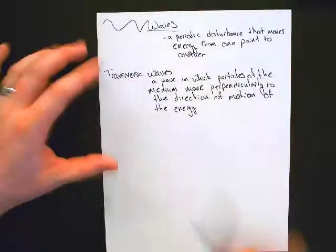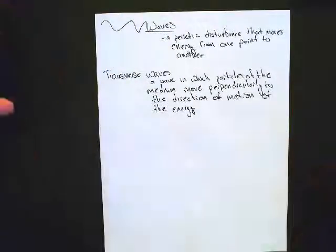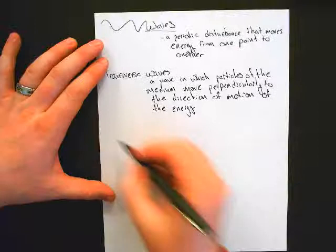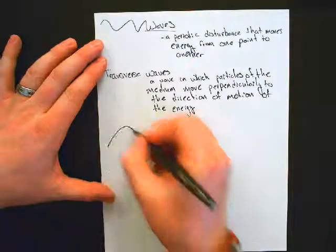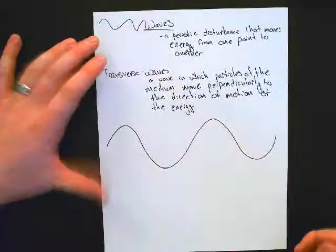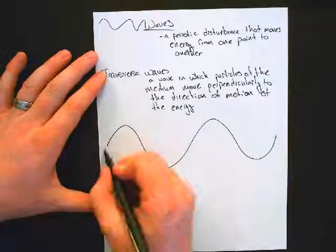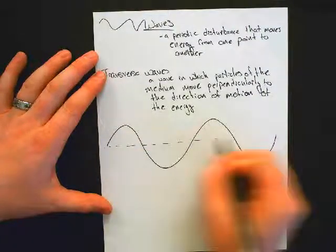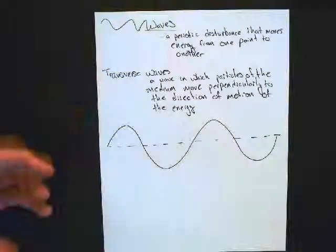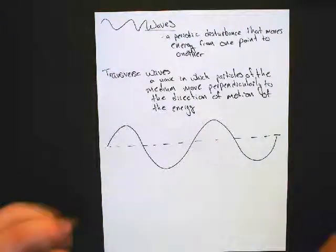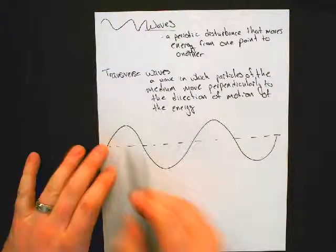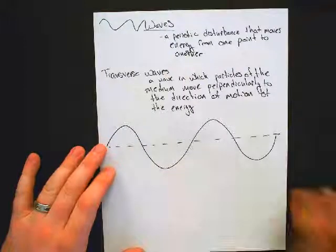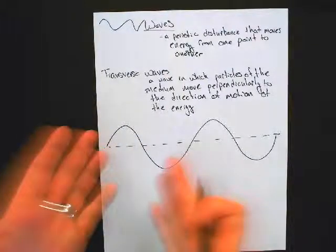Transverse wave. We've got a medium. It's the stuff through which a wave moves. Drawing a transverse wave, this is the one we can most easily visualize because it's our nice sine or cosine curve, where the dotted line represents the rest position of your medium. So in the absence of a wave, your medium would lay nice and flat on the dotted line. In the presence of a wave, it looks like the sine curve.